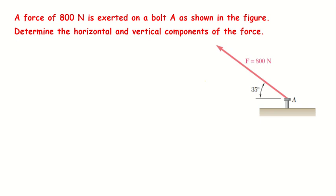Hello everyone, you are welcome to this lesson. In this tutorial you are going to solve this question. The question says a force of 800 Newtons is exerted on a boat as shown in the figure below. Determine the horizontal and vertical components of the force.